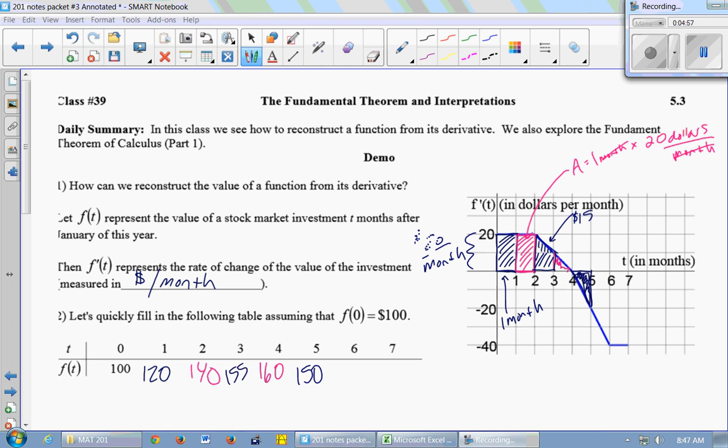Between 5 and 6, what is this area? 30. So this rectangle here is 20, and then this triangle is an additional 10. So the total area there would be 30. So that's another loss of 30. So this goes down to 120.